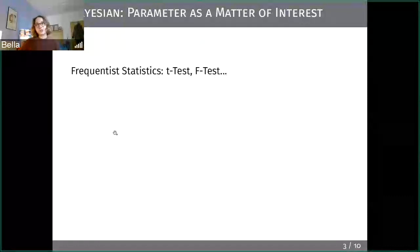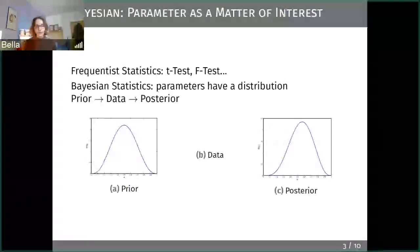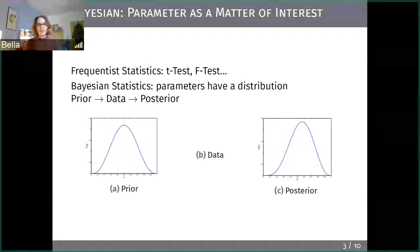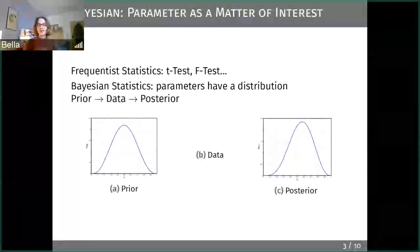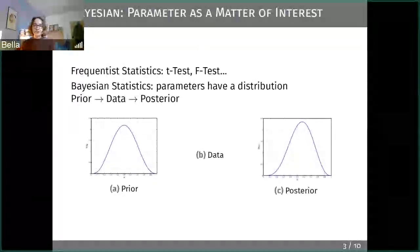Bayesian statistics comes in with a different assumption: here we assume that parameters themselves also have a distribution. This is quite fundamental — it changes the way we think about parameters and how we deal with our data. In Bayesian statistics, we need to do a three-step procedure: the prior, data, and posterior steps. I'll walk through them in some detail. Don't worry about the math too much — I'll show you ways around that, and there's a lot of great literature out there.